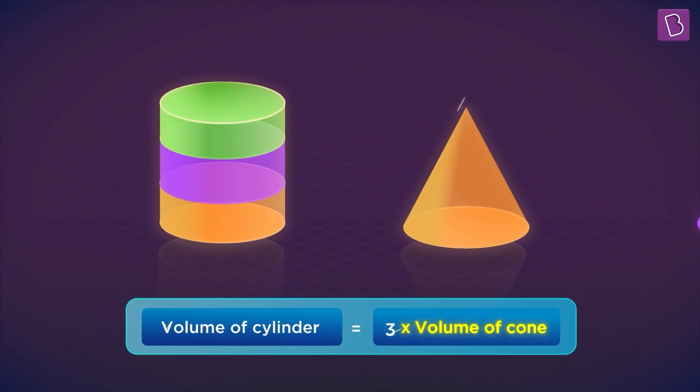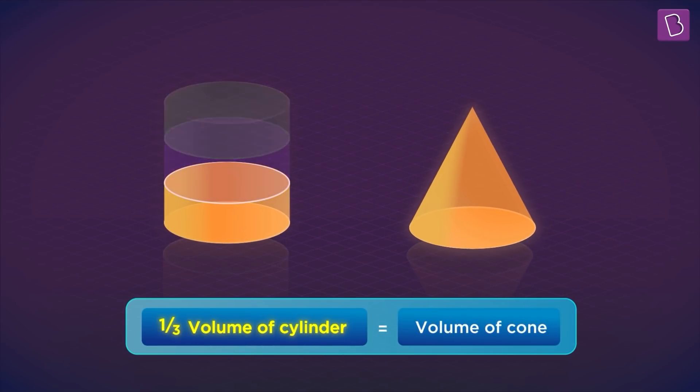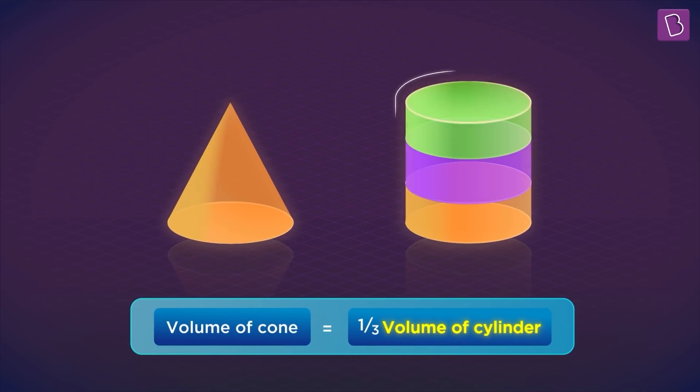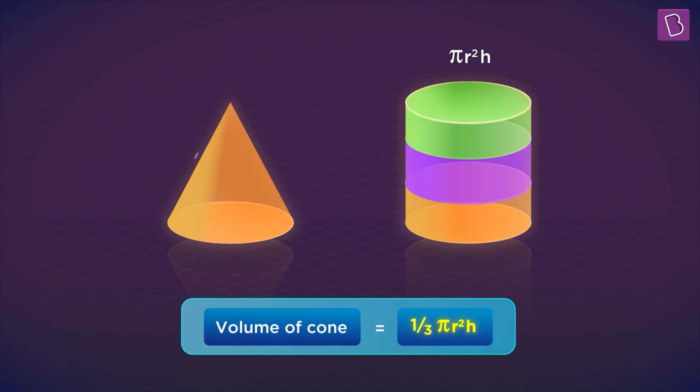Or, the volume of a cone is one third the volume of a cylinder. And since you already know that the volume of the cylinder is pi r square h, then the volume of the cone will be one third pi r square h.